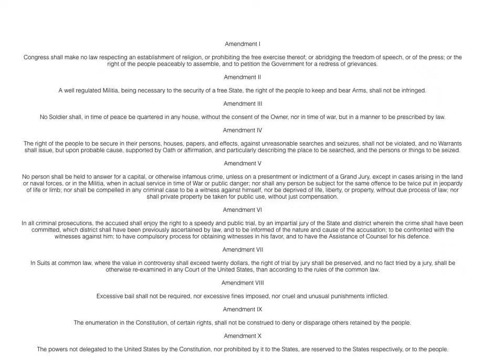Those are what we call our founding documents, and you should be able to think it through logically: you've got to declare independence first to establish self-government. The Declaration of Independence lays those ideas out. Then the Articles of Confederation were the first form of government, followed by the Federalist Papers, the Constitution, and the Bill of Rights. It follows a linear, logical pattern — thinking through them in order helps keep these documents from getting jumbled in your mind.